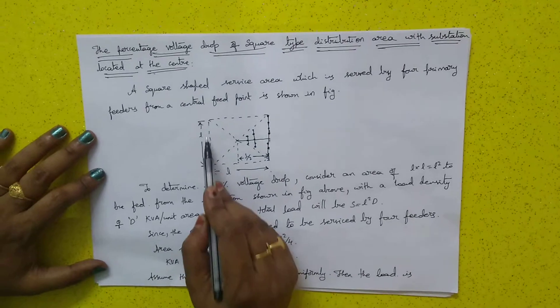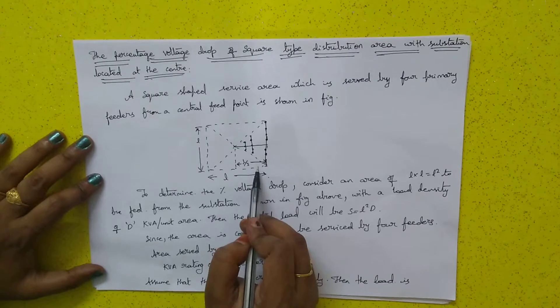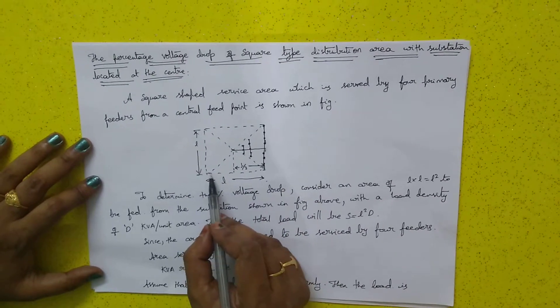A square-shaped service area which is served by four primary feeders from a central feeding point is shown in this figure. To determine the percentage voltage drop, consider an area of L by L.